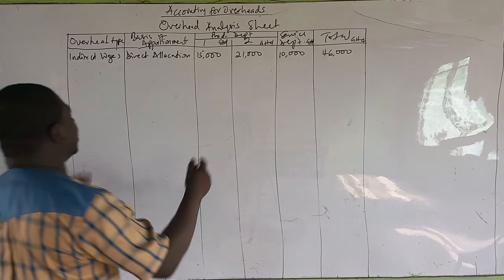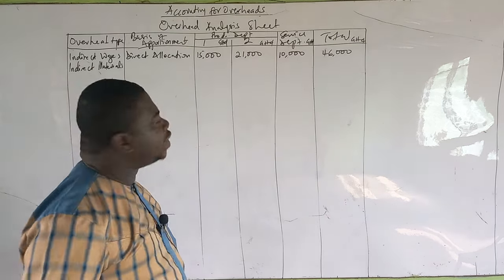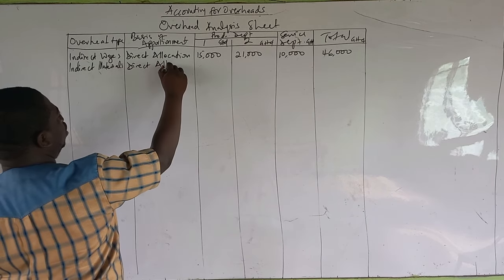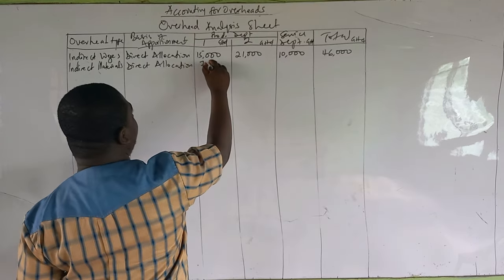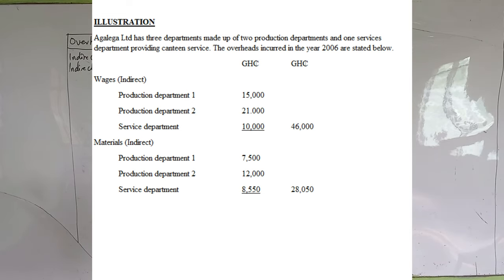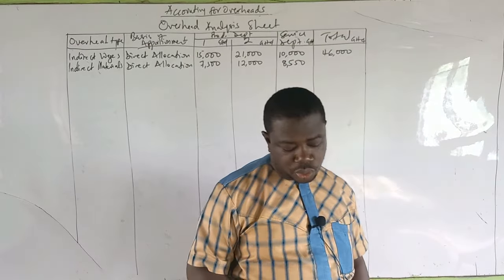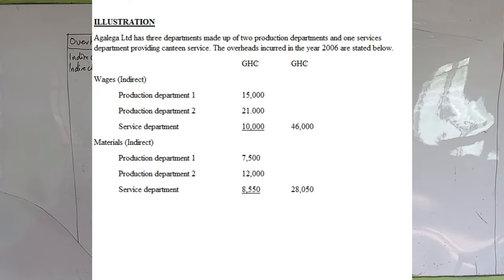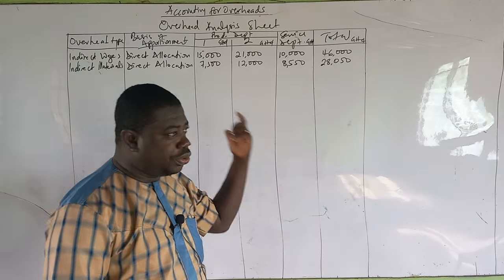The next item is indirect material, which is also a direct allocation because it has been given to us for all the departments. Production Department 1 is $7,500. Production Department 2 is $12,000. And then for the Service Department, indirect material costs is $8,550, giving a total of $28,050. These things are very easy, especially when it's a direct allocation — you get very easy marks here, so you really need to get that.